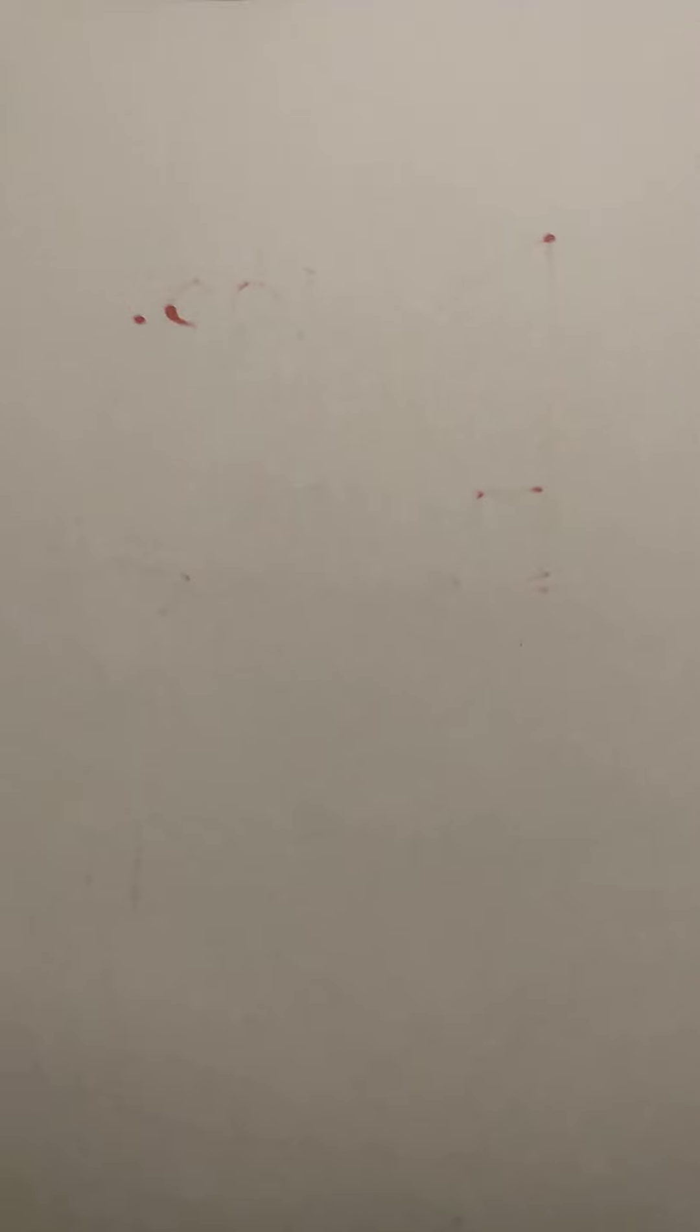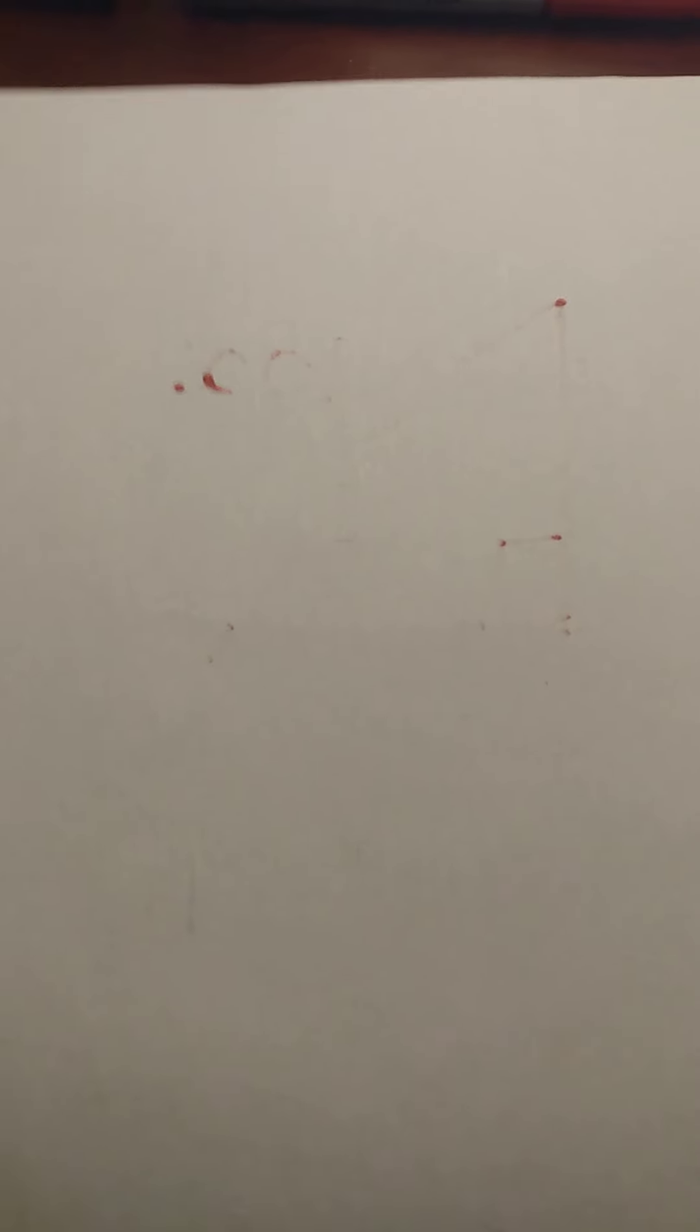So, the tomb that the first emperor was going to build is actually in the shape of a pyramid, like this. Right there, that's the pyramid, right there.